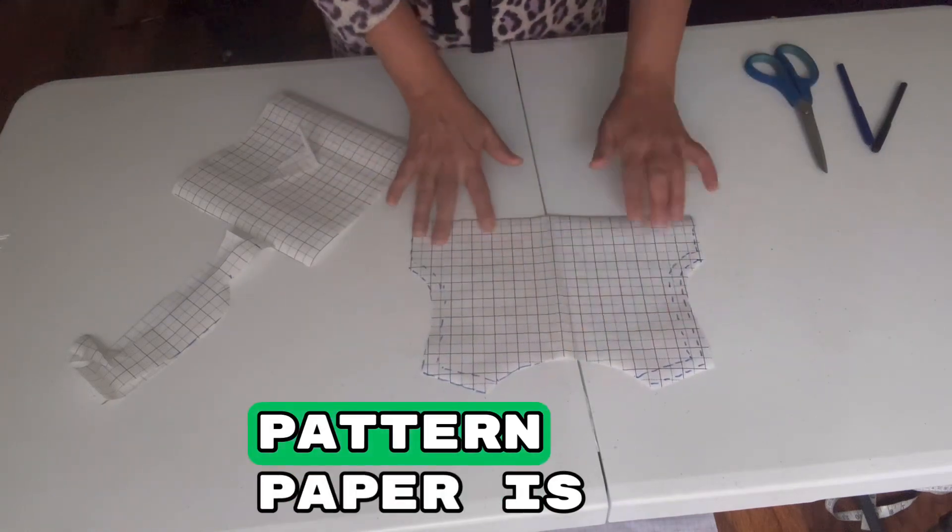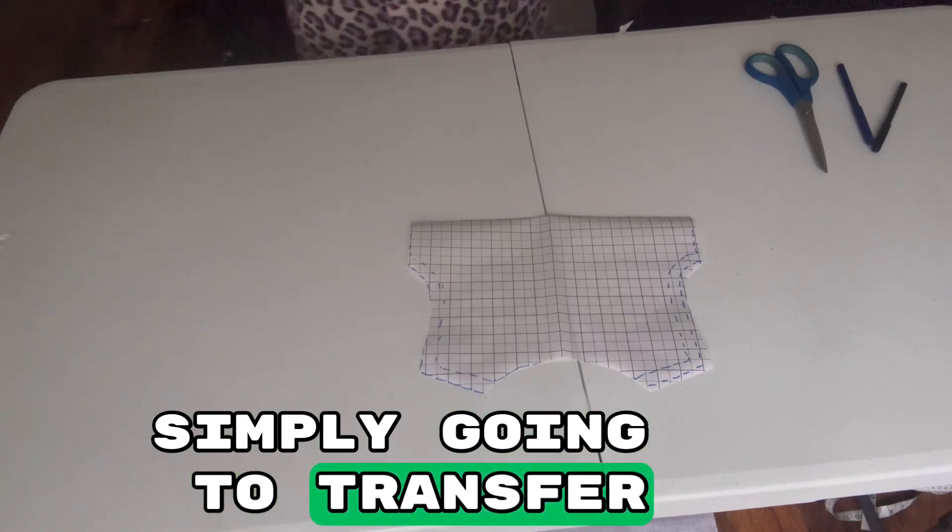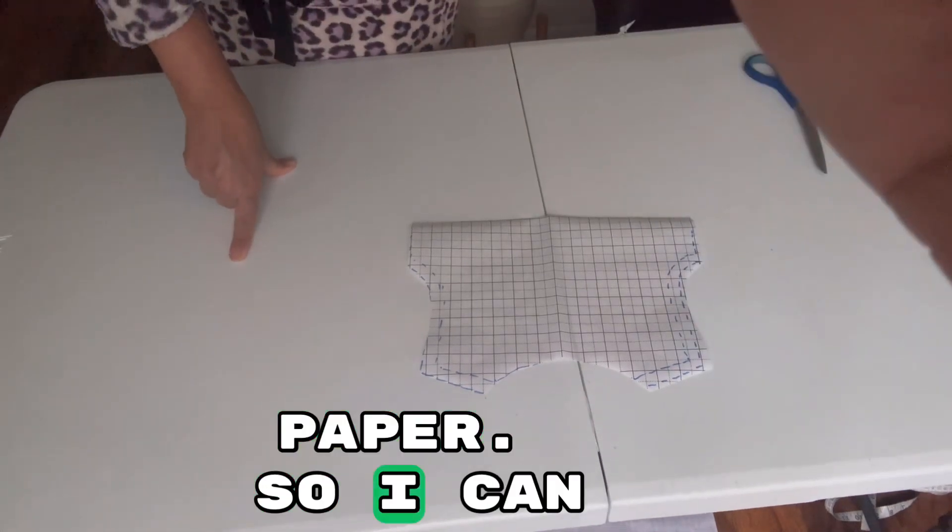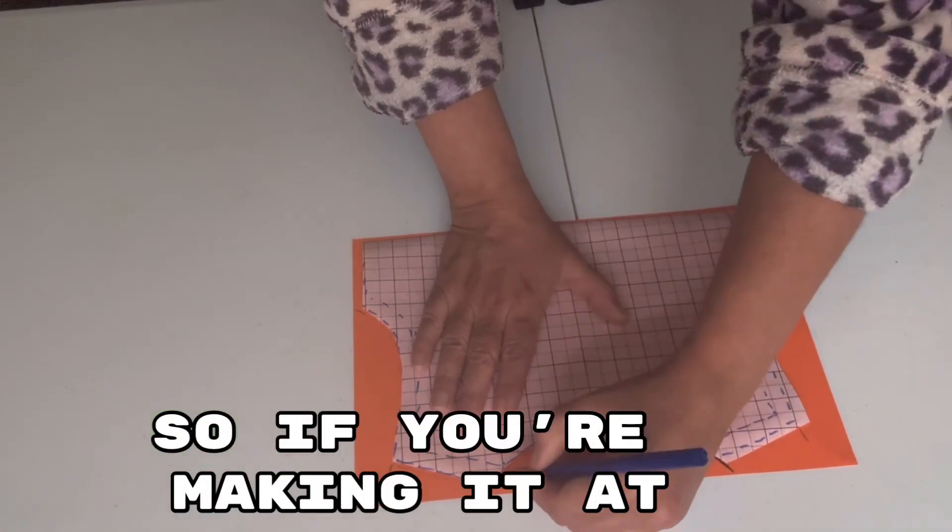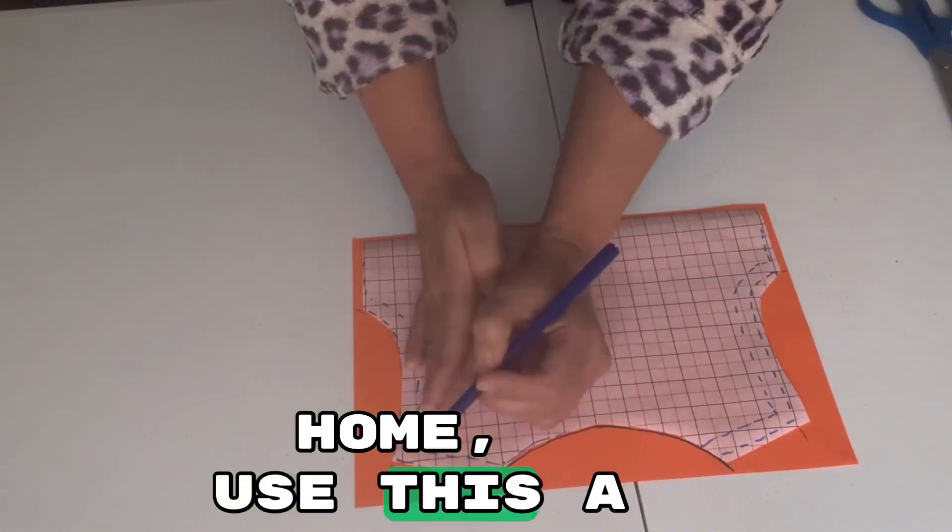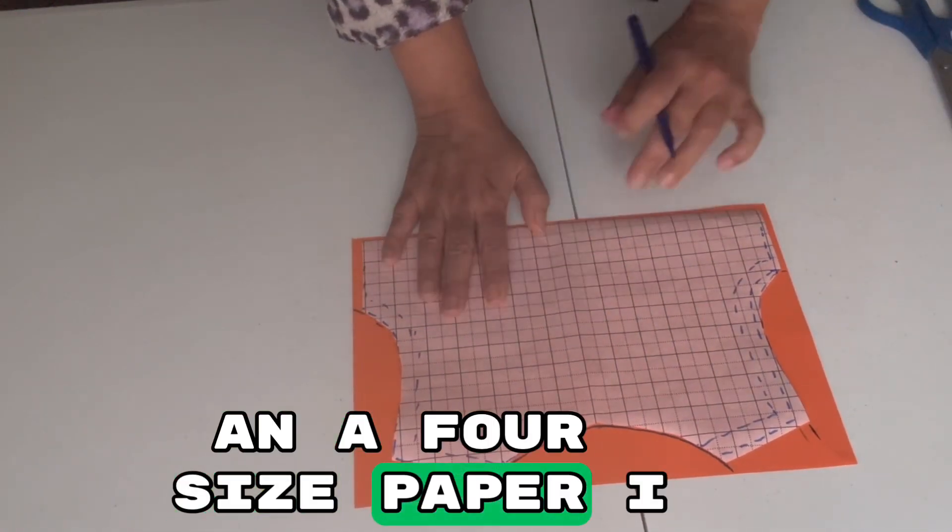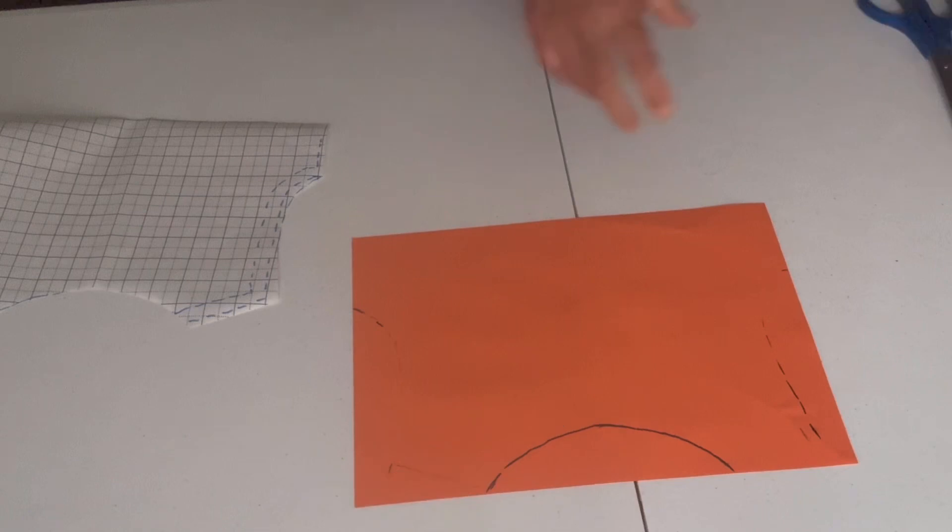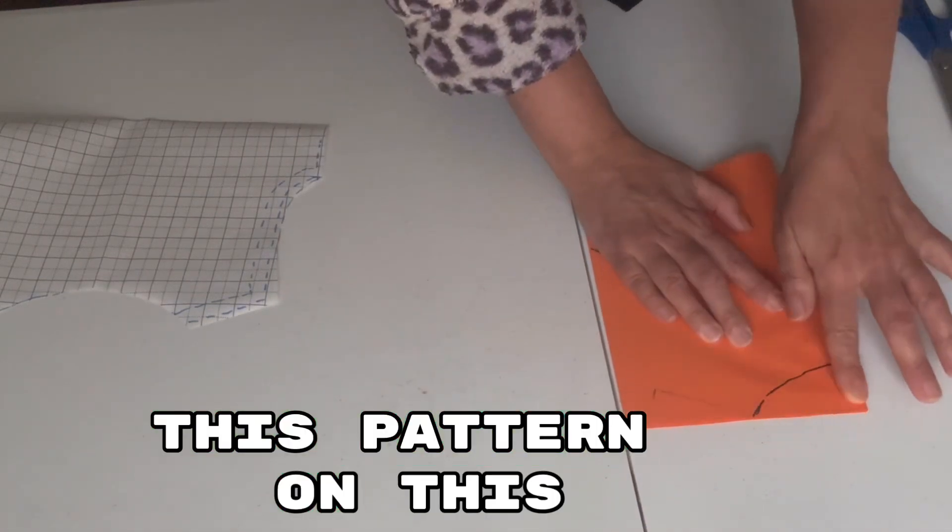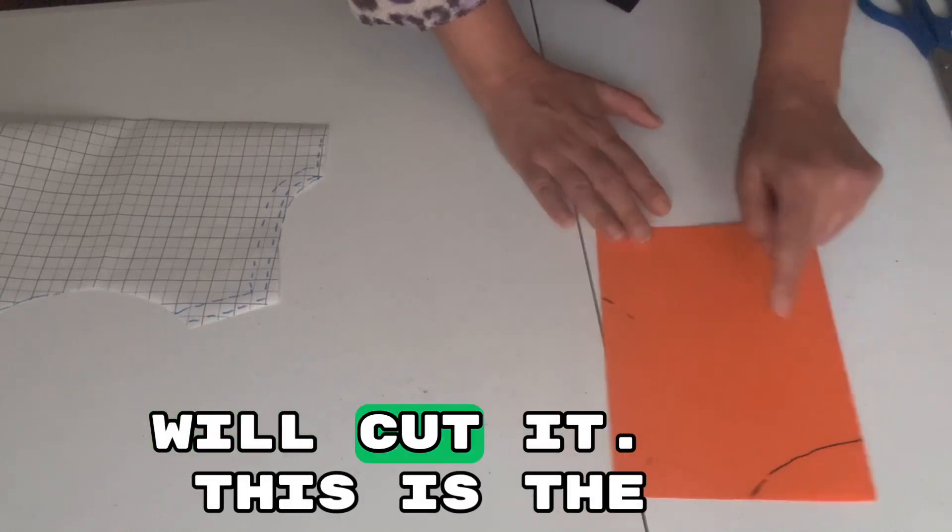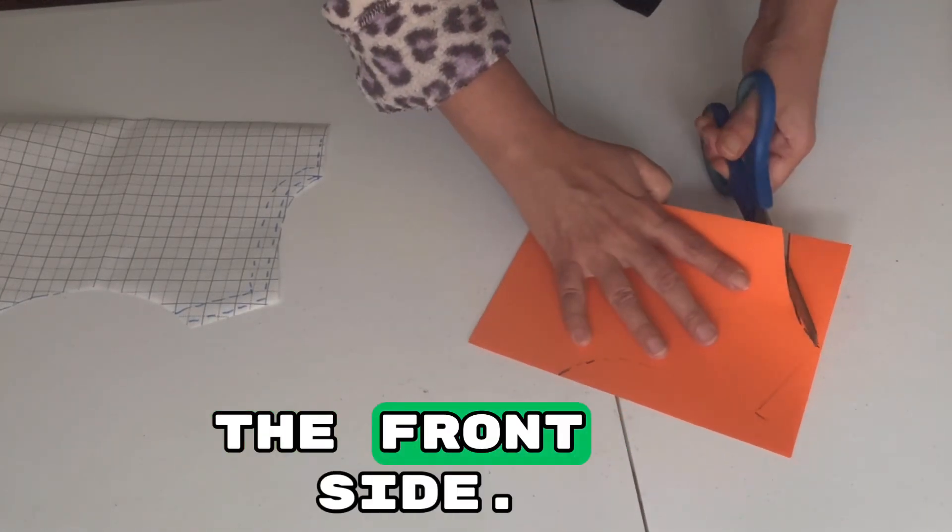This pattern paper is quite thin, so I'm simply going to transfer it onto colored paper so I can keep it and use it again and again. If you are making it at home, use A4 size paper because this is just for a one-year-old baby. I'm simply copying this pattern on this paper and then I will cut it. This is the back side of the bodice, and then we will make the front side.